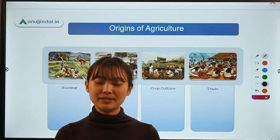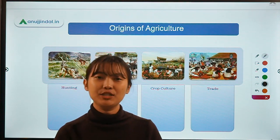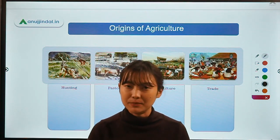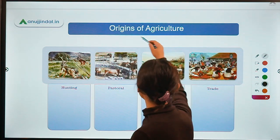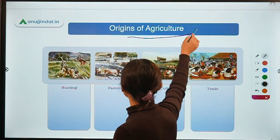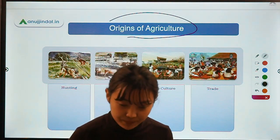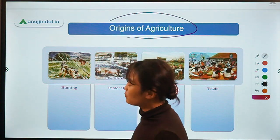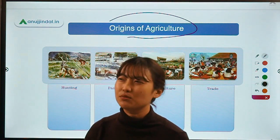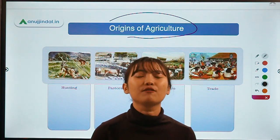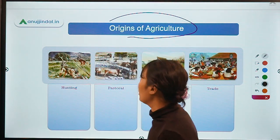Hello everyone, welcome back to our session. We're going to continue what we left off from the first chapter. Today we're going to talk about some of the origins of agriculture in relation to human civilization. The most important event in the whole of human history is the discovery or the innovation of agriculture.